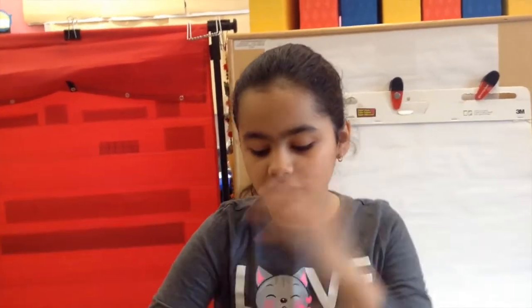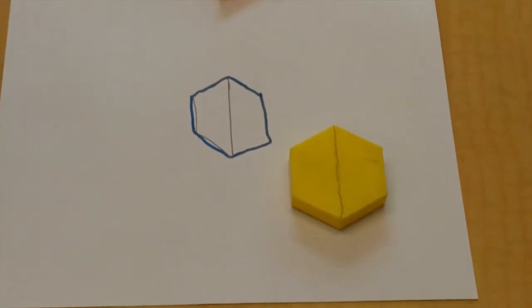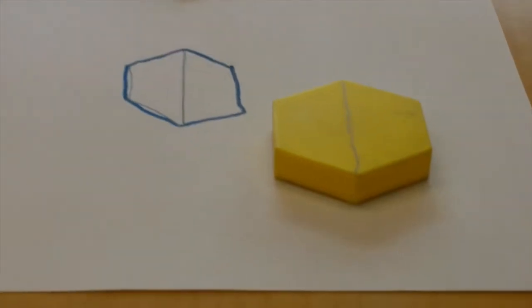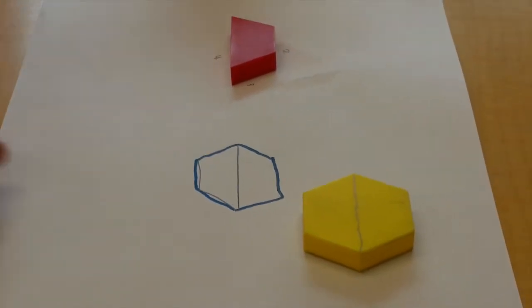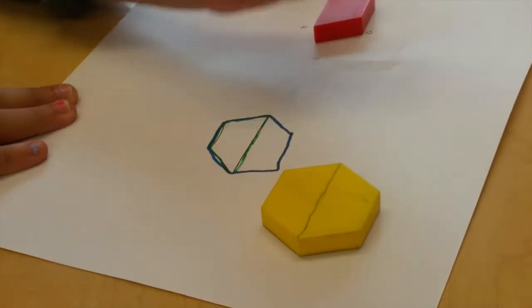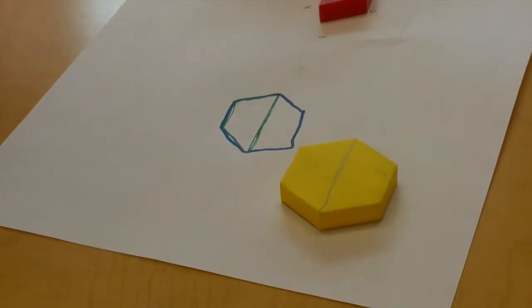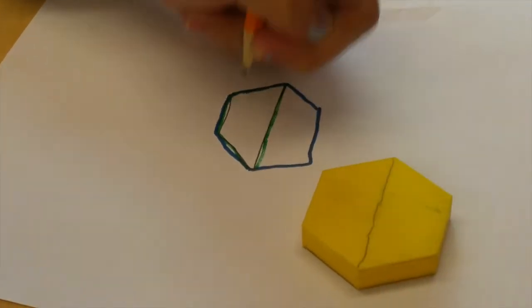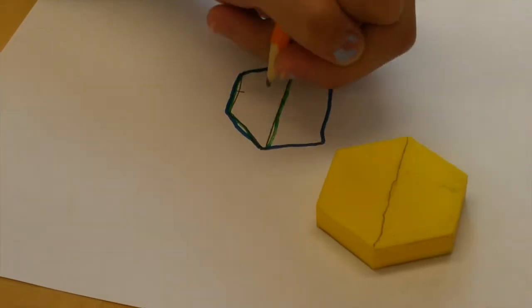So I'm actually more confused. Because then, how does the hexagon have 6 sides? I want you to trace one of the trapezoids. And then as you're going out, you're going to count the sides.